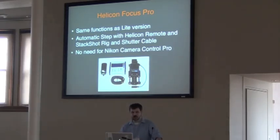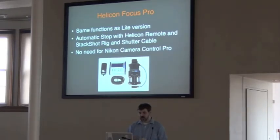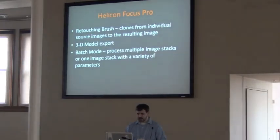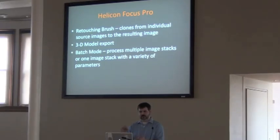With Helicon Focus Lite, you don't have a lot of options — we use it more manually. But if you switch to Helicon Focus Pro, you can utilize automatic settings: you set a bottom and top, set the number of increments in between, and it automatically takes those photographs. To do that you need an automatic step rig called the Stack Shot and a shutter cable. The other benefit is that because Helicon Remote controls your camera, you don't need Camera Control Pro 2. There's also a retouching brush — so if one area in the composite is out of focus for some reason, you can brush in the in-focus version from another frame.